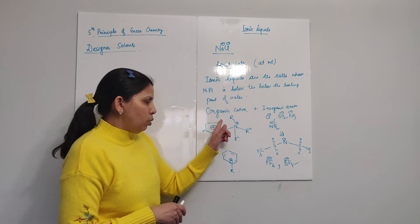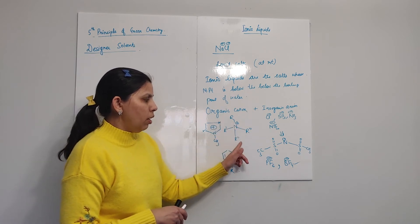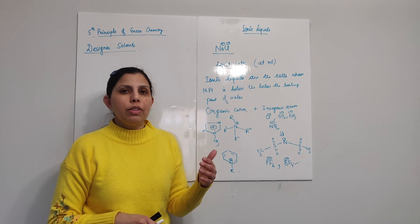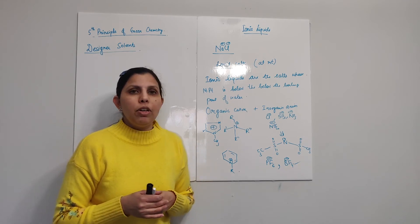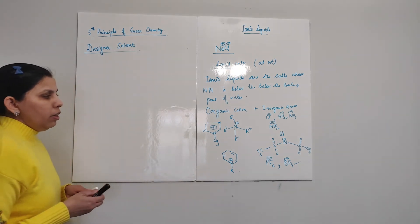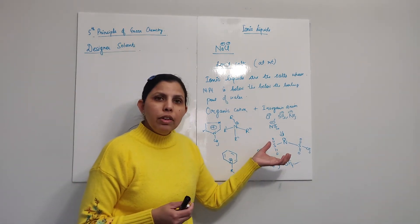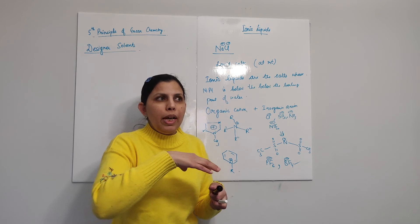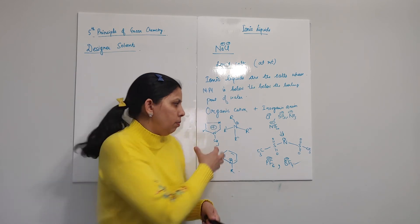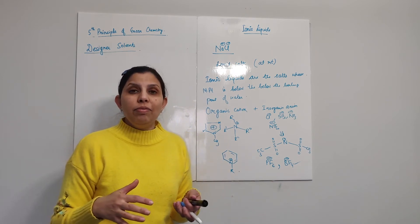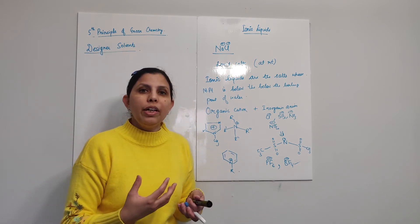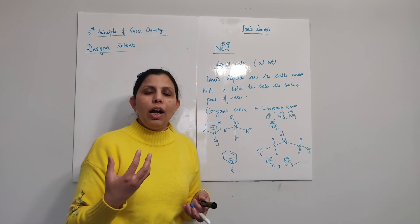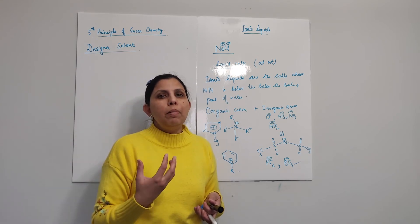Furthermore, the greater the size of the anion, the lower the melting point of the ionic liquid. A larger anion reduces the force of attraction between ions, leading to a more non-coordinating character. The weaker these forces of attraction, the wider the liquidus range and the lower the melting point of the ionic liquid.